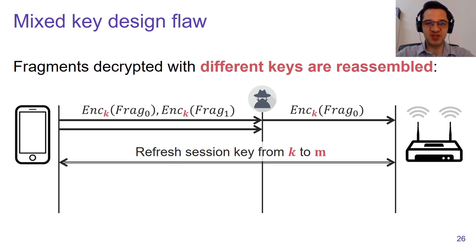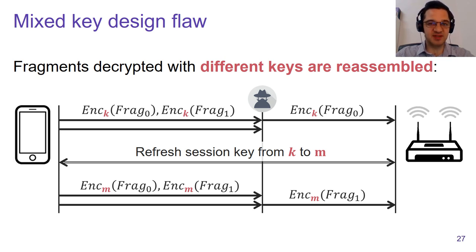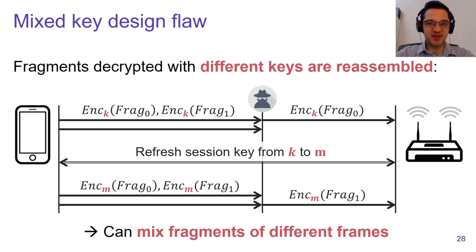We assume the victim refreshes the session key from K to M. This also means certain packet counters will be reset back to one, and some of these counters are used to reassemble fragments back to the correct original frame. If the victim sends a new fragmented frame, the adversary blocks the first fragment and forwards only the second fragment. Because the packet counters were reset, the access point wrongly reassembles this fragment with the first fragment forwarded earlier, even though these two fragments were decrypted under different keys. This means we can trick a receiver to reassemble fragments belonging to different frames.